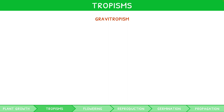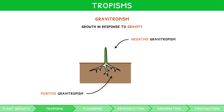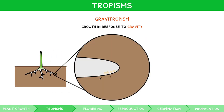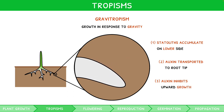Gravitropism is the response in growth of a plant to gravity. All shoots grow away from gravity, known as negative gravitropism, whilst all roots grow towards it, known as positive gravitropism. The process relies on molecules known as statoliths, which accumulate on the lower side of a root, causing auxin to be transported to the lower side. However, here the higher concentration of auxins inhibits growth, thus bending the root downwards towards gravity.